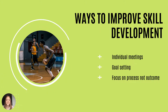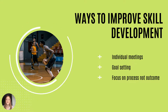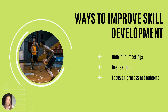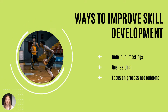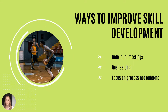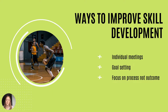The last thing I'm going to cover today are ways to improve skill development. There are three ways to improve skill development: individual meetings, goal setting, and focus on the process, not the outcome. For individual meetings, come up with a game plan that will help the athlete achieve higher success and go over that plan with them.